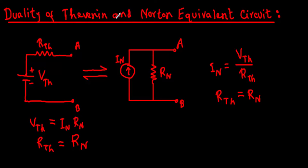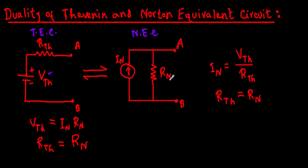There is a duality of Thevenin and Norton equivalent circuits. If I convert a big circuit into a single voltage source VTH in series with RTH — the Thevenin equivalent circuit — I can then convert that into a Norton equivalent circuit. The Norton resistance equals the Thevenin resistance, and the Norton current IN is found by dividing the Thevenin voltage VTH by the Thevenin resistance RTH.